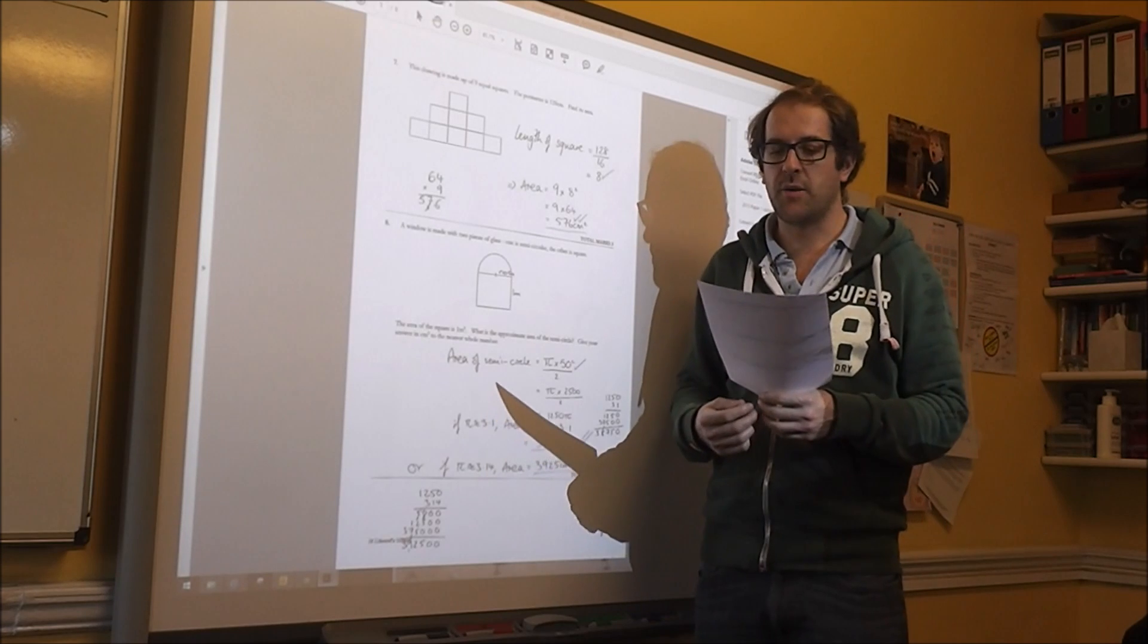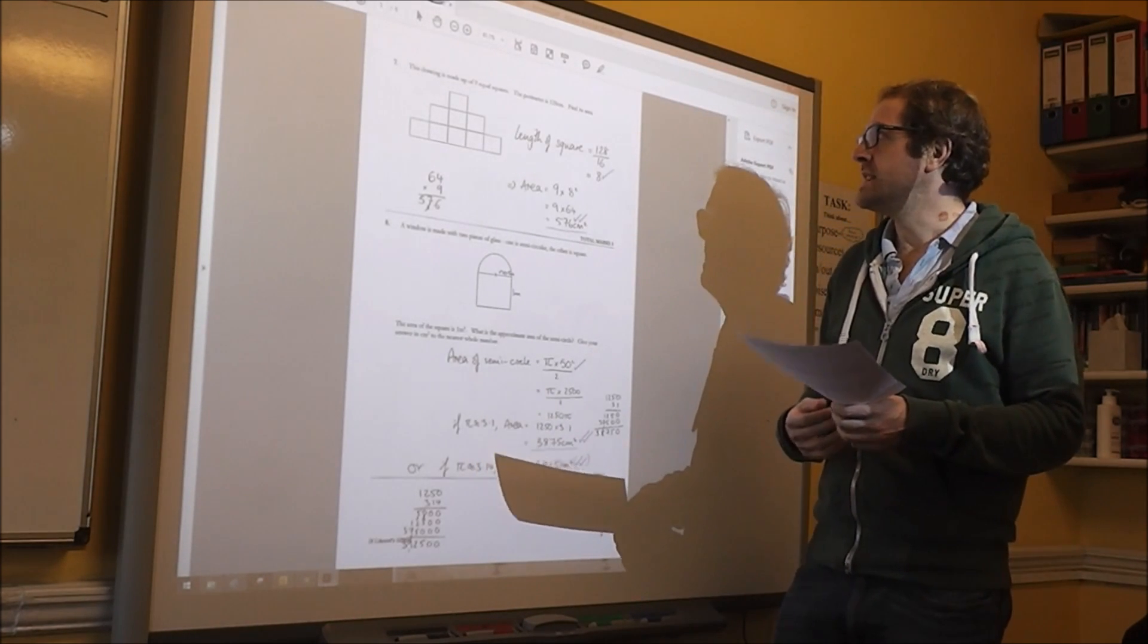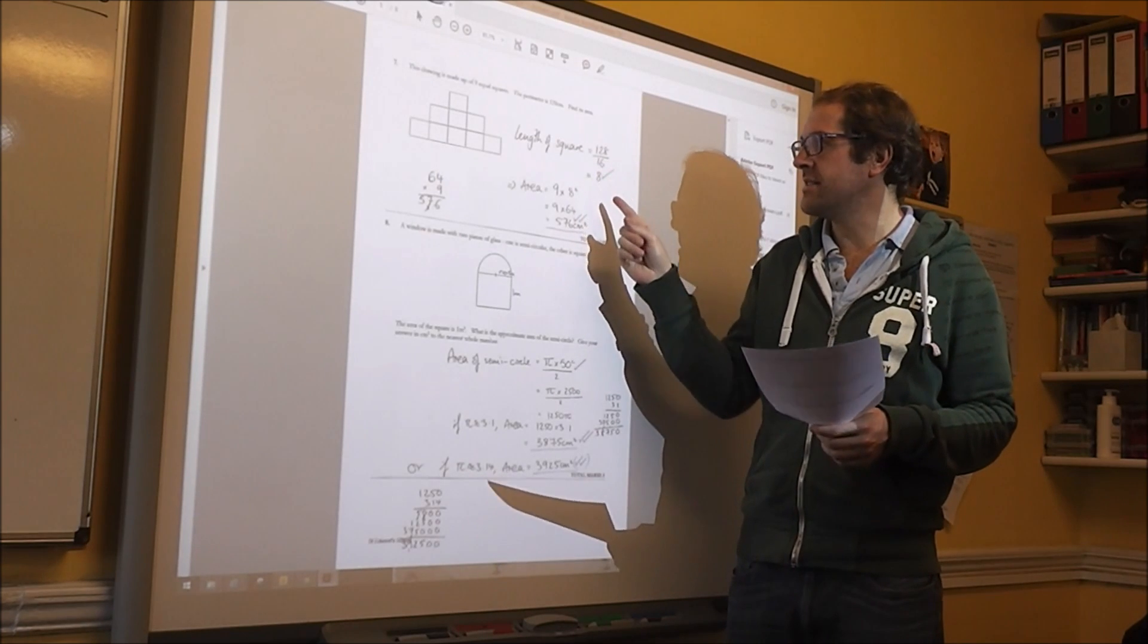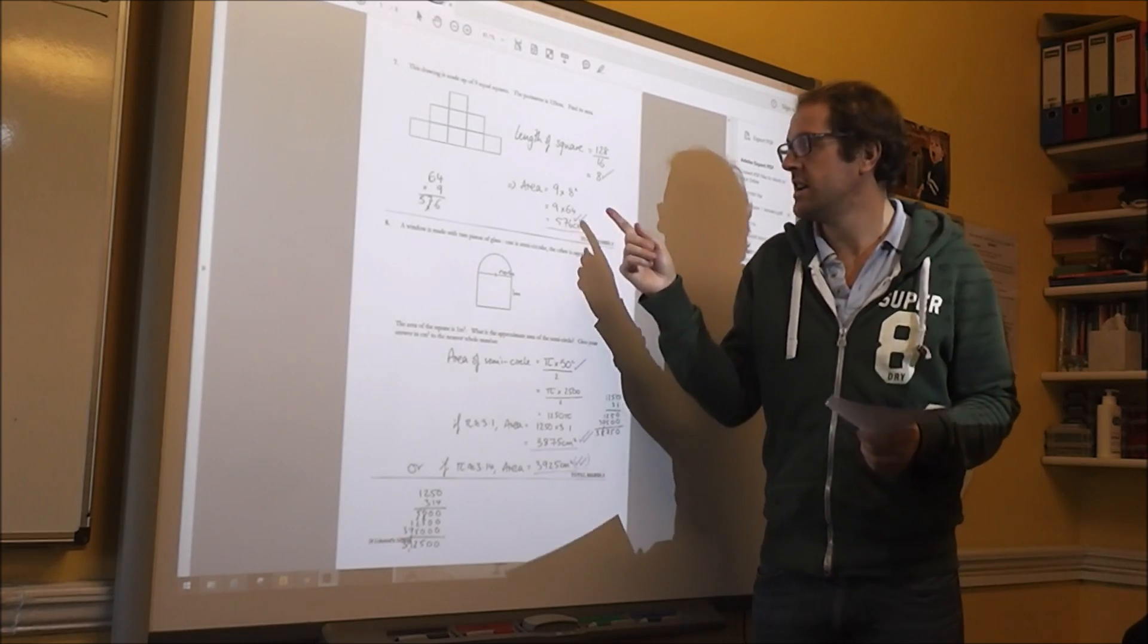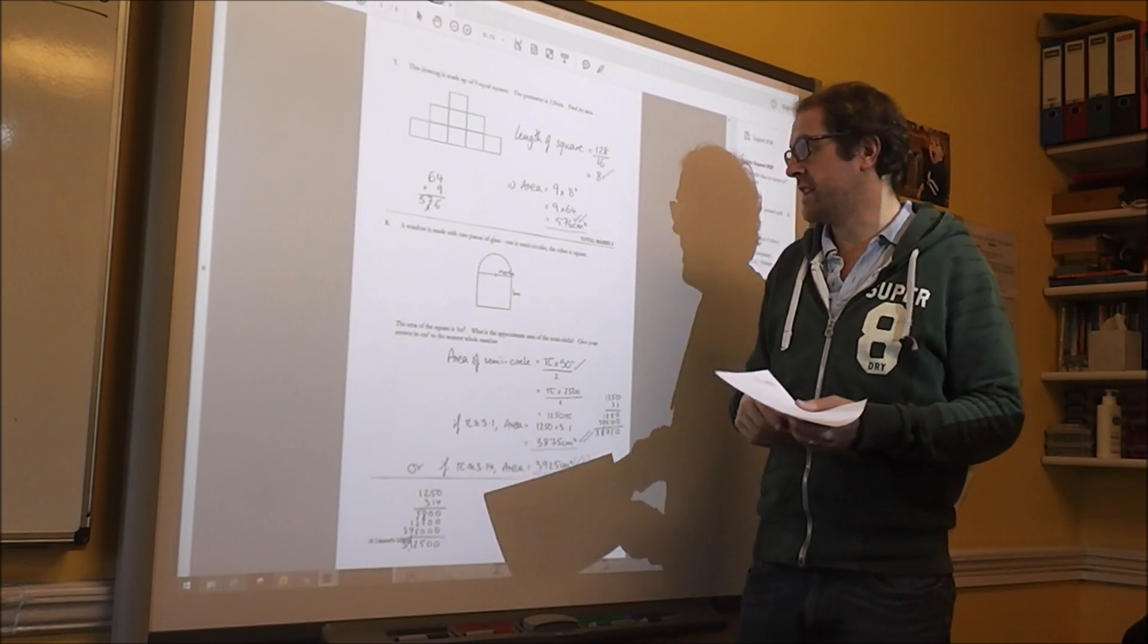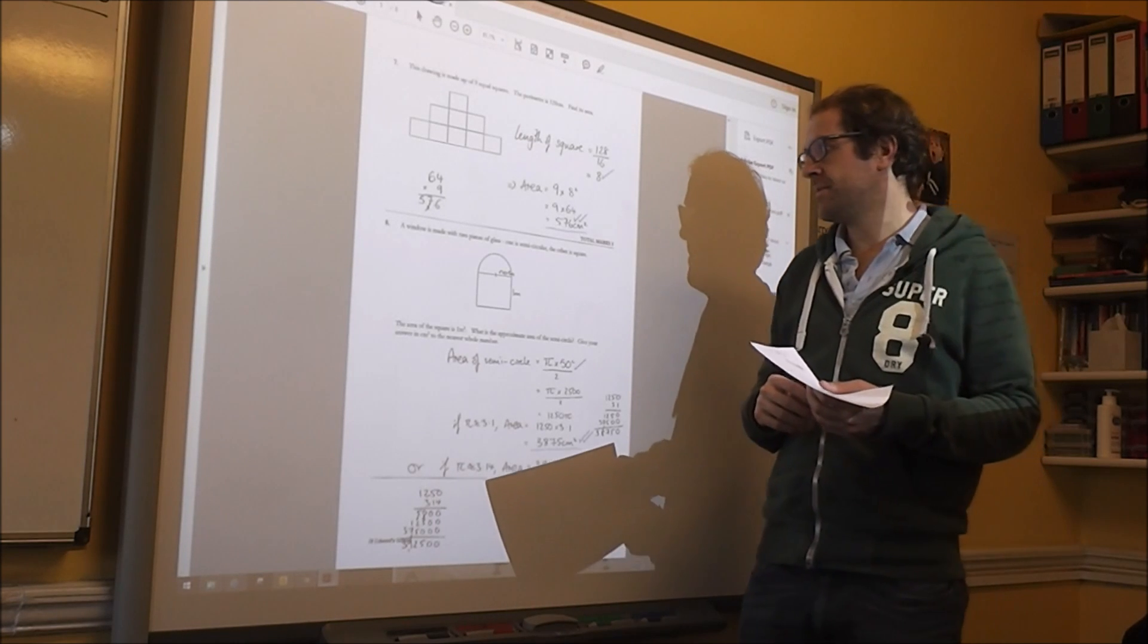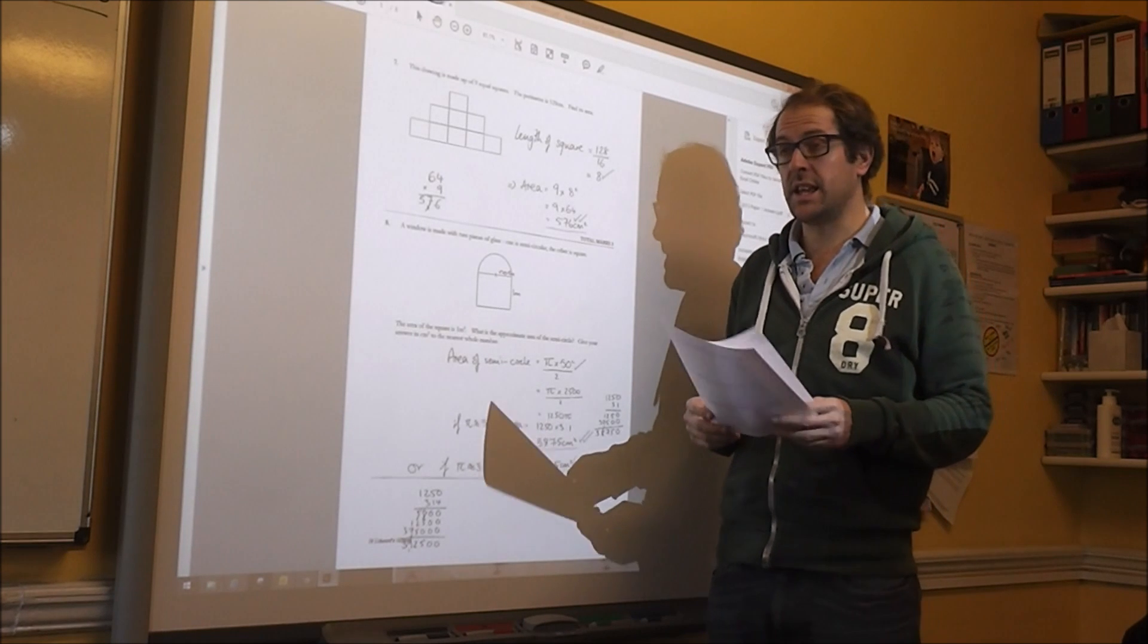Okay, number 7. We know the perimeter. We've got to find the area. So what I did is I worked out all the lengths around the outside. So the length of 1 square is 8. So the area is 9 lots of 1 square. So 9 times 64, which is 576 cm squared, which coincidentally is 24 squared.